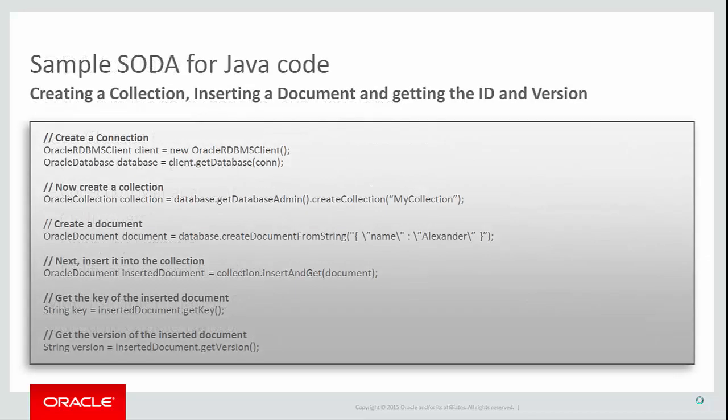This slide shows a simple program written in SODA for Java. The program establishes a connection to the document store, creates a collection, inserts a document into the collection, and returns the key of the newly inserted document. This is done by instantiating the OracleRDBMSClient class and calling its getDatabase method, which takes a JDBC connection object as its only argument — the only time a SODA for Java developer needs to directly interact with JDBC. Using a JDBC connection also gives you access to transaction control, and sharing a JDBC connection means you can have an application with a mixture of SODA for Java calls and conventional JDBC calls sharing the same connection and transaction semantics.